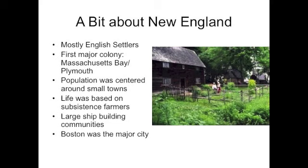The population was centered around small towns and townships, which made for a very close-knit community. Life was based on subsistence farming, meaning farmers grew just enough for their families to get by. Some communities, like upper Massachusetts — what is today Maine — and New Hampshire, had large shipbuilding communities because of the tall forests surrounding them. The biggest city in New England was Boston, which, as we will soon learn, becomes the hub of the American Revolution.